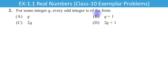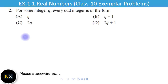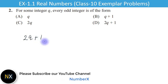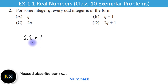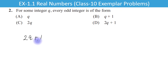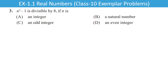Question 2: For some integer q, every odd integer is of the form. Odd integers ki property kya hoti hai ki wo hoti hai 2q plus 1 ke form mein. Iska matlab kya hai — yadi us integer ko 2 se divide kiya jaye to remainder 1 aata hai. So D is the right answer.